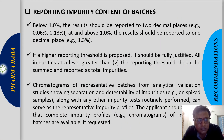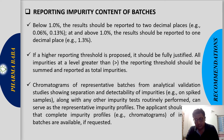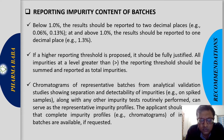For reporting impurity results: below 1%, the result should be reported to two decimal places — for example, 0.06, 0.13. At and above 1%, the result should be reported to one decimal place, like 1.3. Normal rounding rules can be used to round off to two decimal places. If a higher reporting threshold is proposed, it should be fully justified.